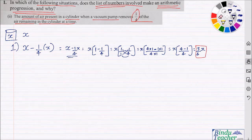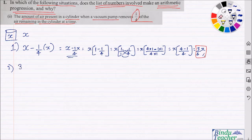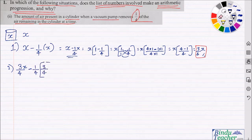Now what happens when the pump runs for the second time? Again, it will remove one-fourth of the air remaining. The air remaining is now 3/4 X. So when the pump runs it is going to remove one-fourth of 3/4 X, leaving 3/4 X minus one-fourth of 3/4 X.